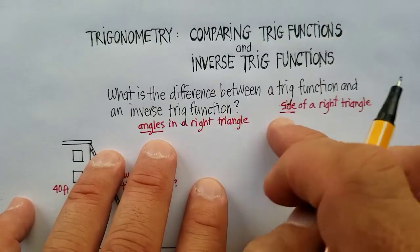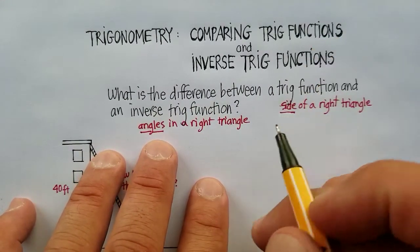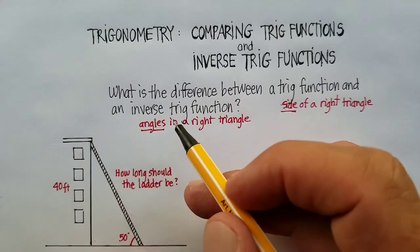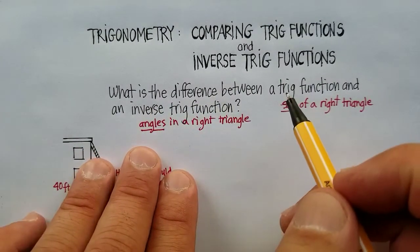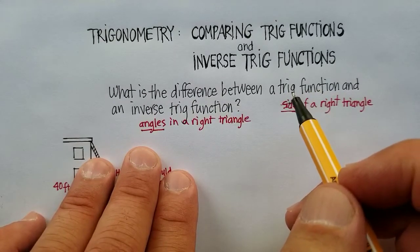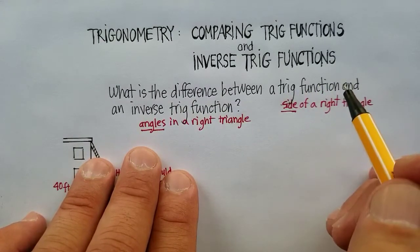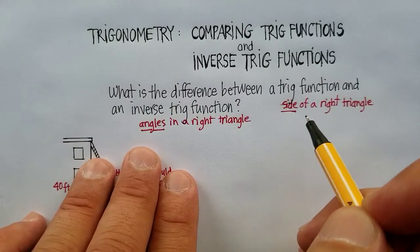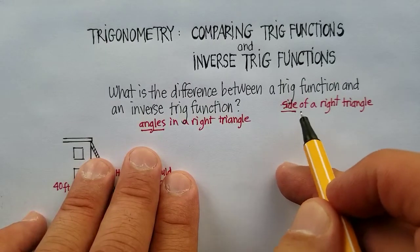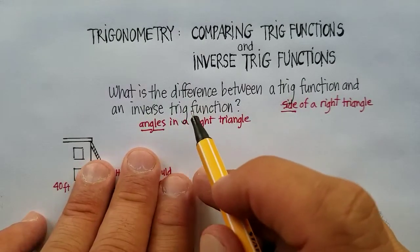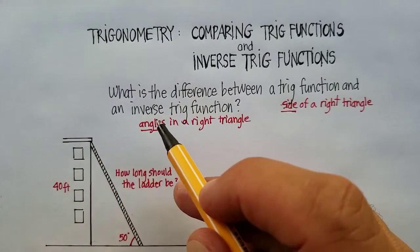Now, inverse trig functions are a way of finding the angles in a right triangle, whereas a regular trig function, which is just sine, cosine, and tangent, are how to find the sides of a right triangle. So think of regular trig as finding lengths, and inverse trig functions as finding the actual angles.